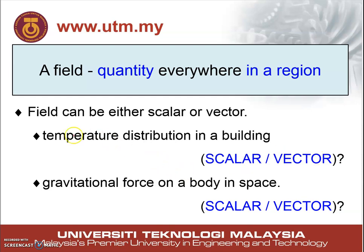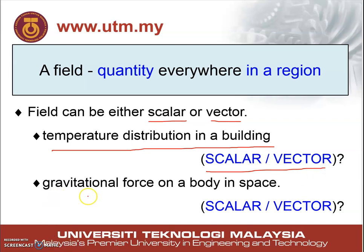A field is a quantity defined everywhere in a region. Fields can be either scalar or vector. For example, temperature distribution in a building — as we know, temperature is a scalar quantity. And gravitational force on a body in space — the gravitational force itself is a vector quantity, so it must be a vector field.